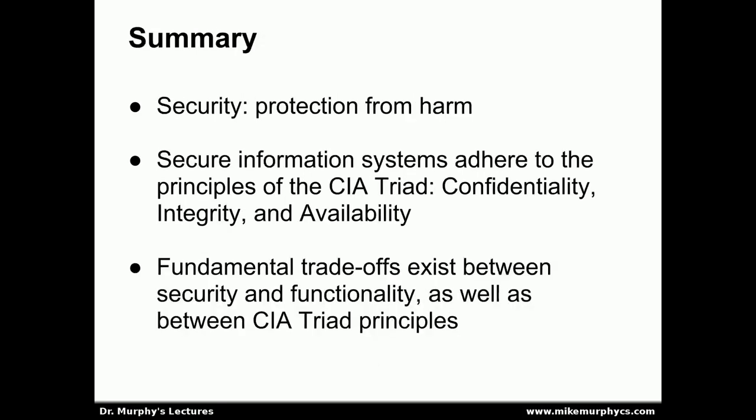To summarize, our main goal with security is to provide protection from harm. In the context of information systems, we focus on the CIA triad: confidentiality, integrity, and availability. Fundamental trade-offs exist between security and functionality, as well as between the principles of the CIA triad. There is no magic bullet to security and no simple product that makes a system immediately secure. Many trade-offs must be considered in order to design a system that maximizes the principles of the CIA triad, including availability to authorized users.